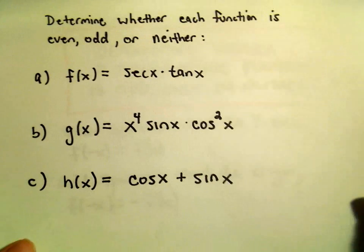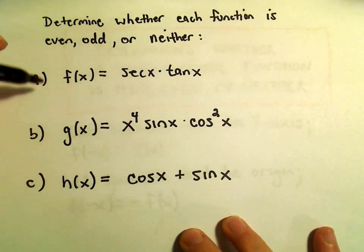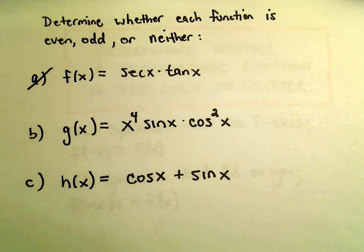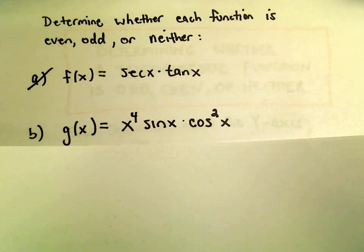So another example here figuring out whether a function is even, odd, or neither, and here we're going to do x to the fourth times sine x times cosine squared x.